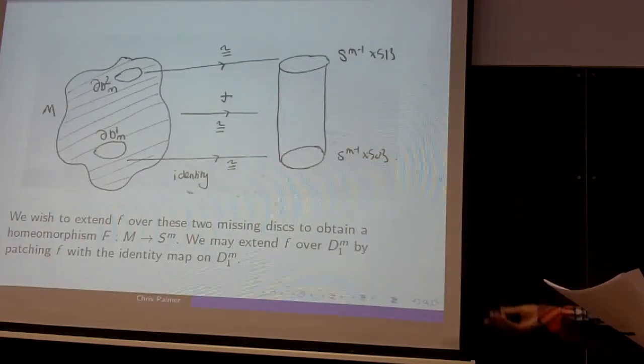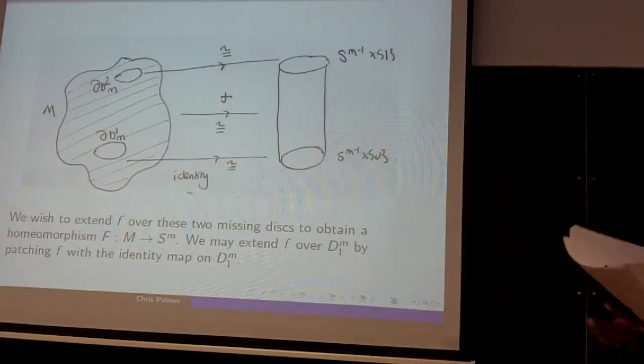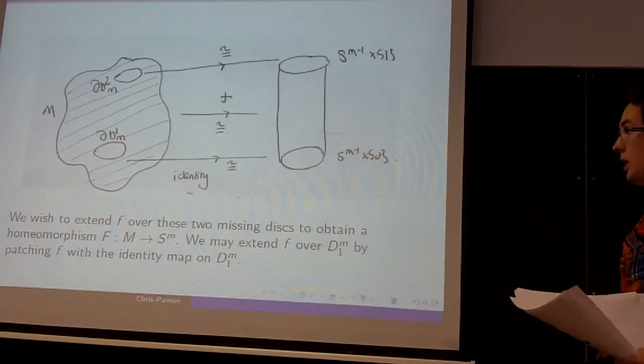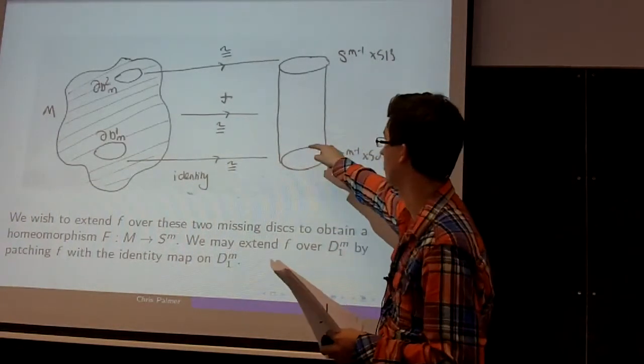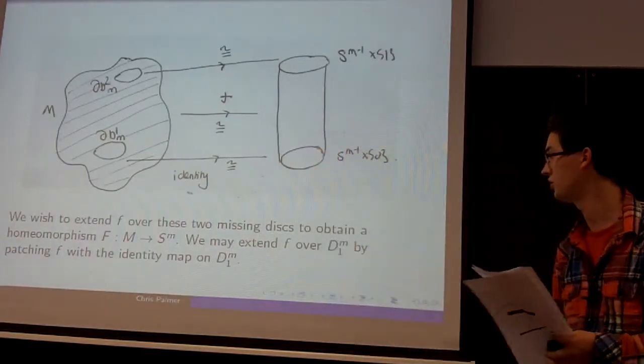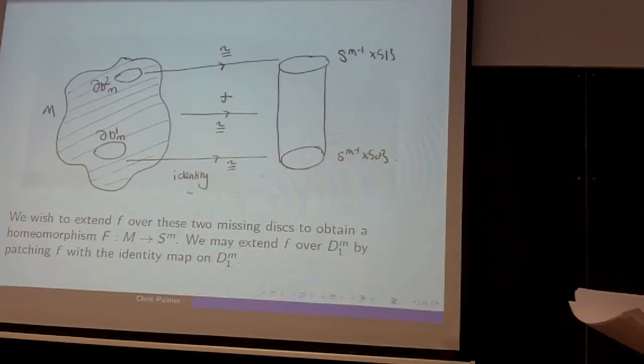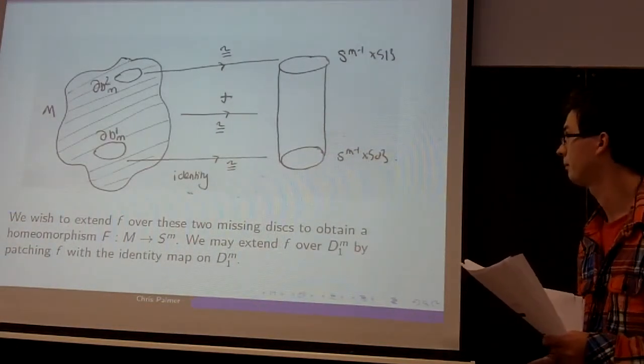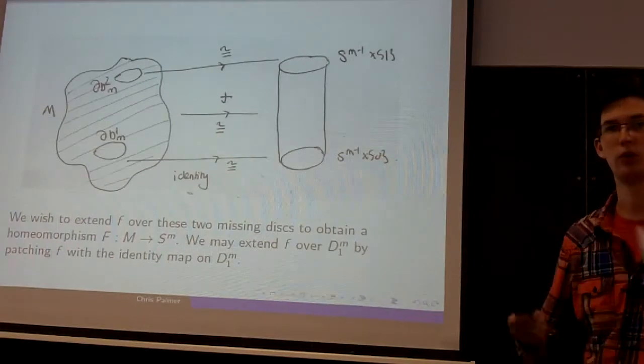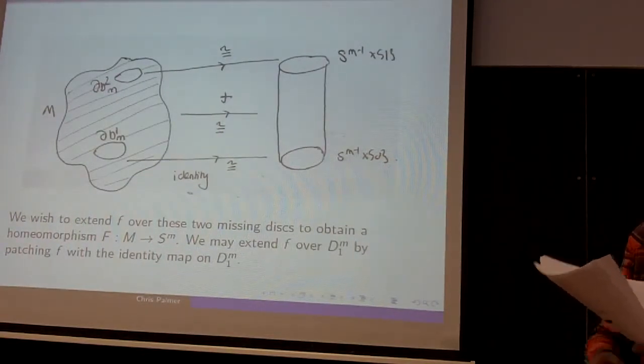So this is described in the following diagram. The idea is we then want to extend F over the two missing discs to give a homeomorphism between M and this cylinder where we cap it at the bottom and cap it at the top, which is just an M-sphere. It's quite easy to do on the lower first disc, D₁^m, because we know that the restriction to the boundary is the identity, so we can simply use the identity map.